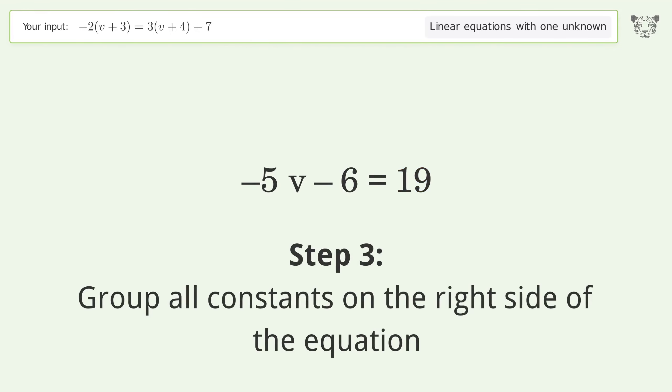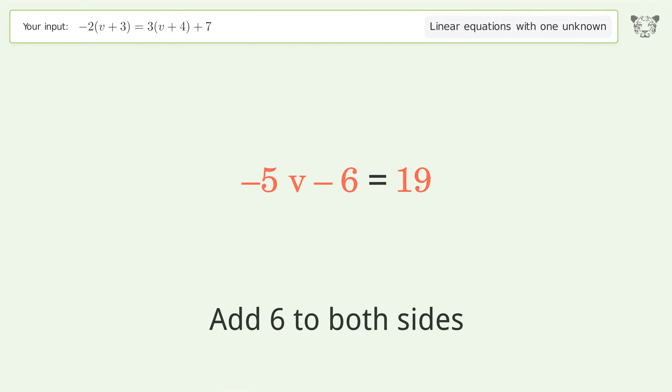Group all constants on the right side of the equation. Add 6 to both sides. Simplify the arithmetic.